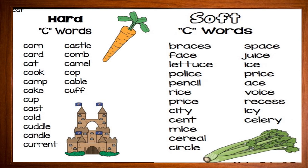For the soft sound of C: braces, face, lettuce, police, pencil, rice, city, scent, mice, cereal, circle, space, juice, ice, price, voice, success, and celery.